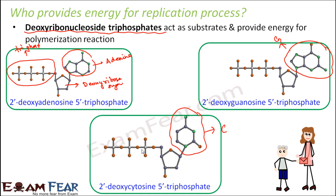So now we are aware of all the machinery and the enzymes. For this process, of course we need the DNA. Other than DNA, we need quite a few enzymes and we also need these deoxyribonucleoside triphosphates to provide the energy. So let us now try to understand the exact process of replication.